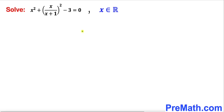Welcome to pre-math. In this video we are going to solve the given equation: (x² + x) / (x + 1), whole square, minus 3 equals 0, where x represents all real numbers.